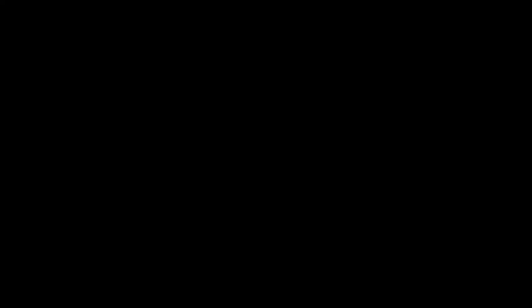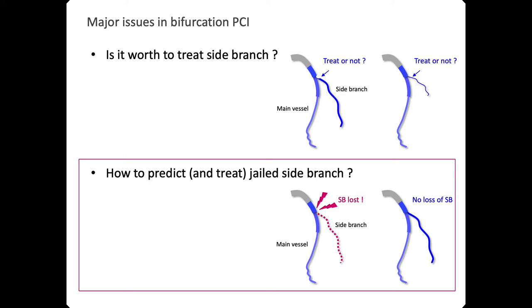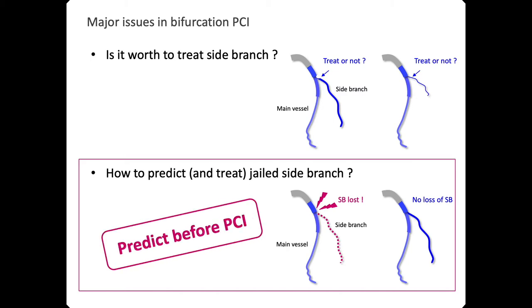The first speaker is Dr. Choi. Thank you for the invitation to present at EBC 2021. The title of my presentation is 'CT Bifurcation Score as a Novel Tool for Predicting Intra-Procedural Side Branch Occlusion.' This is the first of two presentations. I have nothing to disclose. There may be two major issues in bifurcation PCI: first, is it worth treating the side branch? Second, how to predict and treat a jailed side branch before PCI, not during or after ballooning.